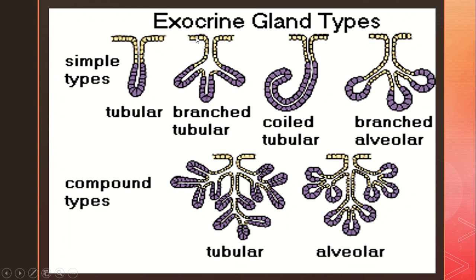So those are the types of exocrine glands as a basic introduction. You can refer to books like Ross and Wilson for more detail. Now, the types of exocrine glands: there are simple types and compound types. Simple is straightforward, compound is more complex — you can see this in the diagram.